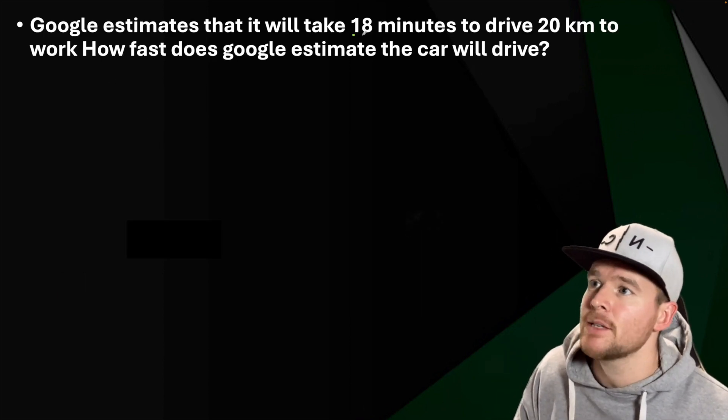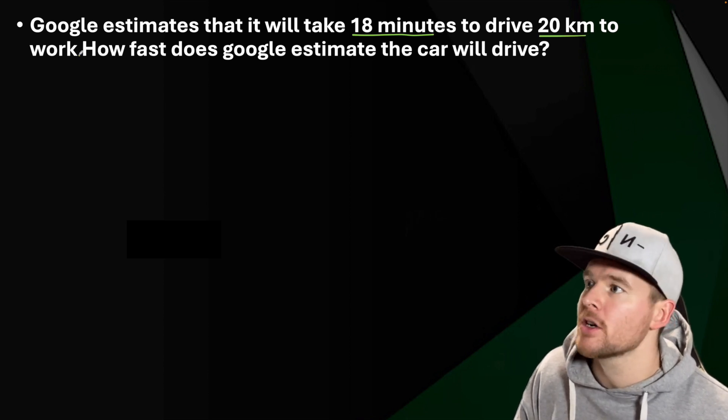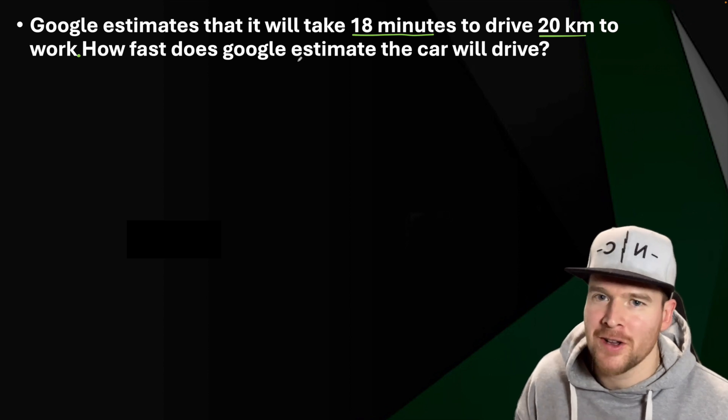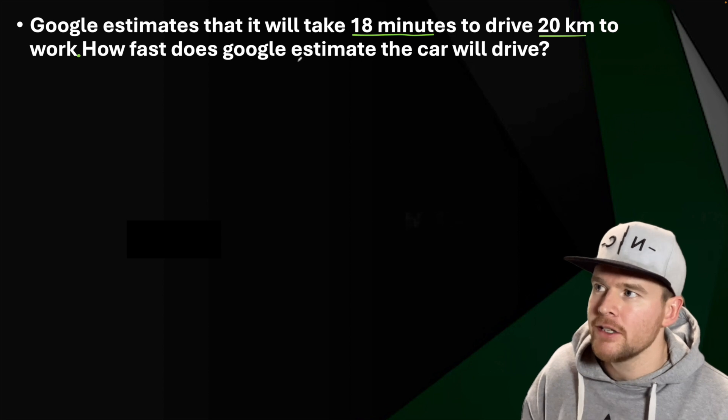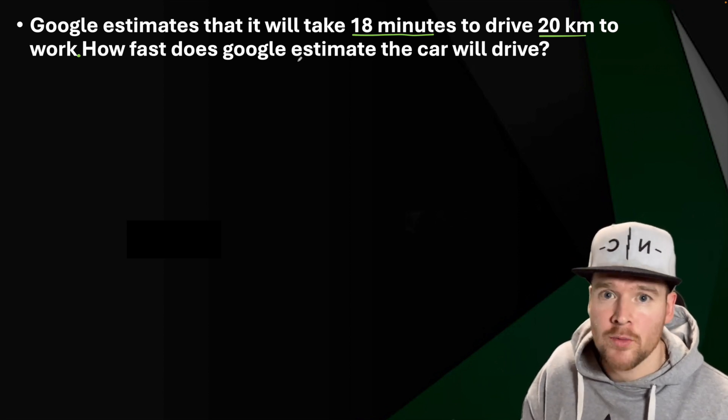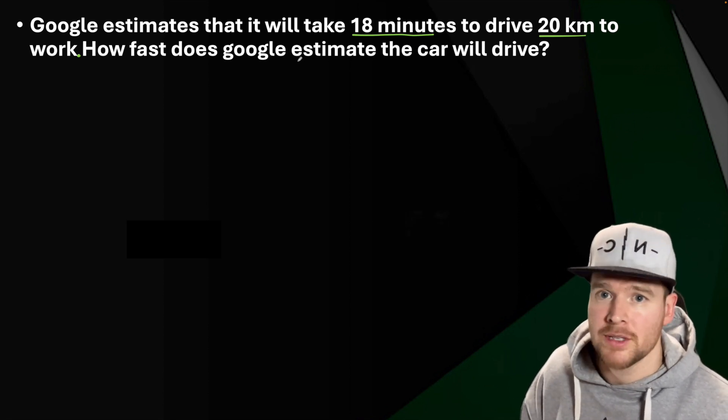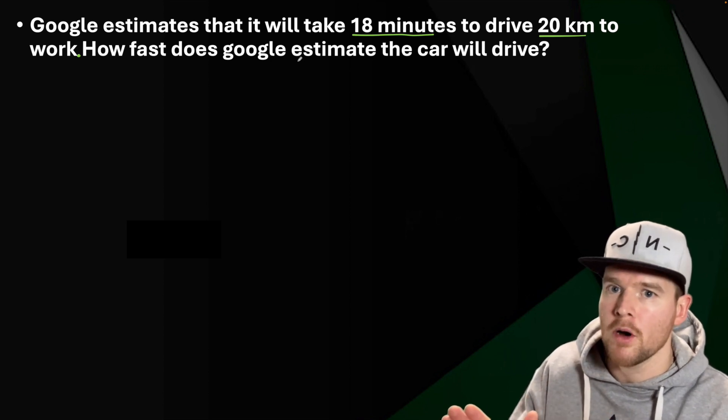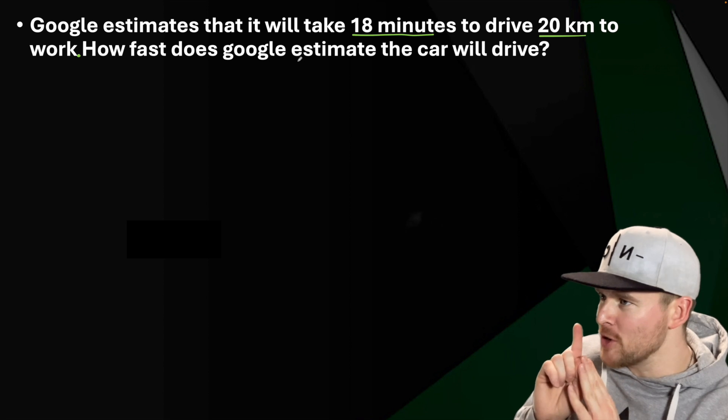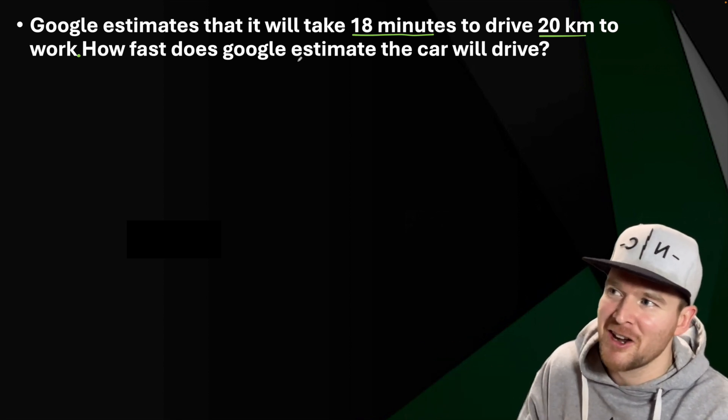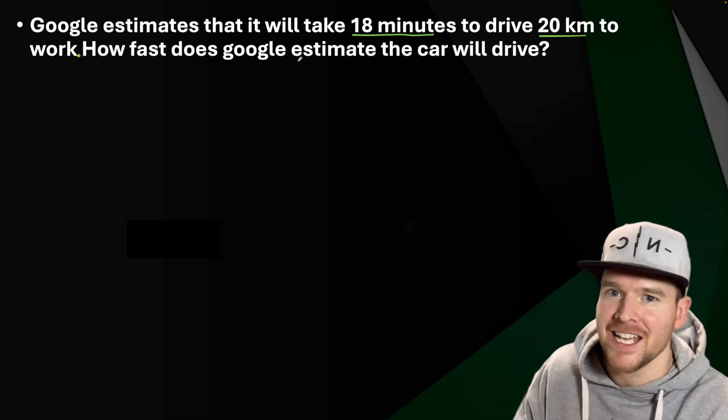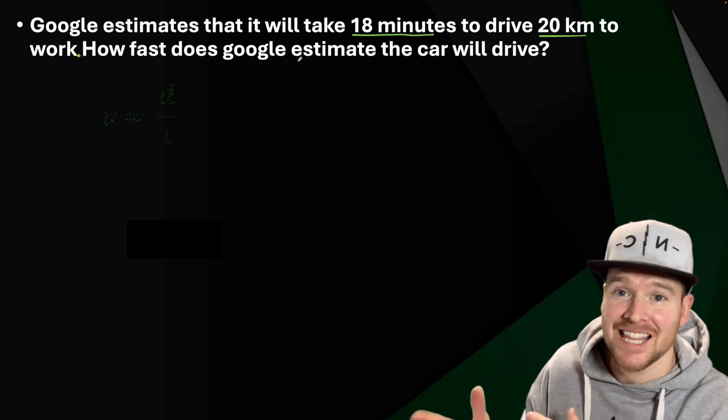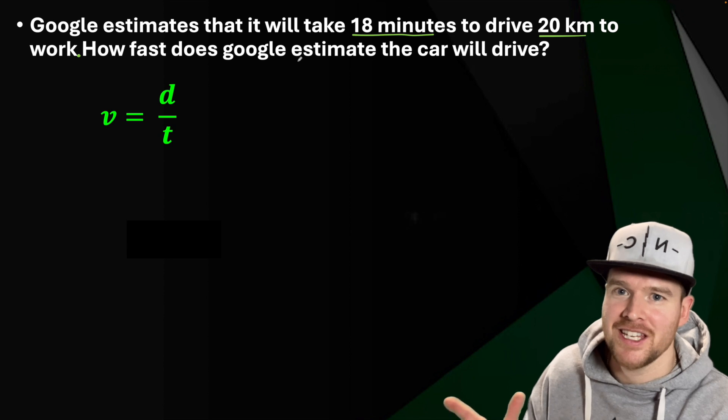Looking at the first example here, it says Google estimates that it will take 18 minutes to drive 20 kilometers to work. How fast does Google estimate your car will drive? Now, a little bit of a caution off the start here. Normally, when you type into Google Maps, you're not going to be in uniform motion because sometimes you're in town going slower, sometimes on the highway going faster, sometimes stopped at a light. But for this example, let's say that you're in uniform motion. So if it's uniform motion, we can use v is equal to d over t.